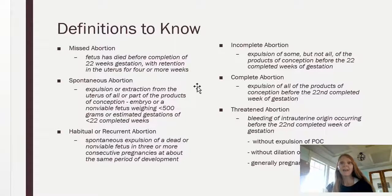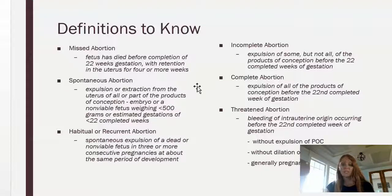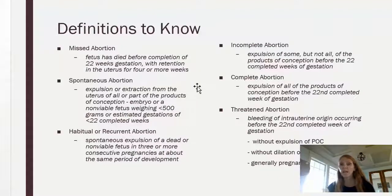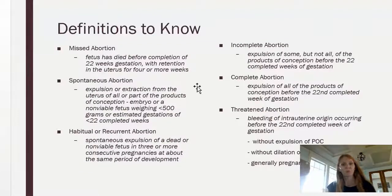These are spontaneous acts — not when a patient electively chooses to have an abortion. These are spontaneous cases where the body, for whatever reason, does not keep the fetus and expulses it or tries to expulse it. A missed abortion is when the fetus has died before 22 gestational weeks and is retained in the uterus — the female typically doesn't know she has miscarried and the baby has been in there for up to four weeks. A spontaneous abortion is when part of the products of conception have been expelled, again up until 22 weeks.